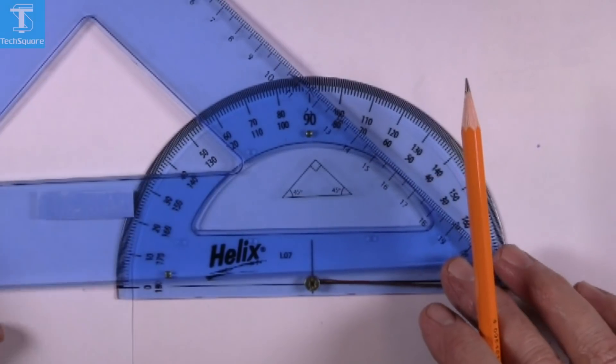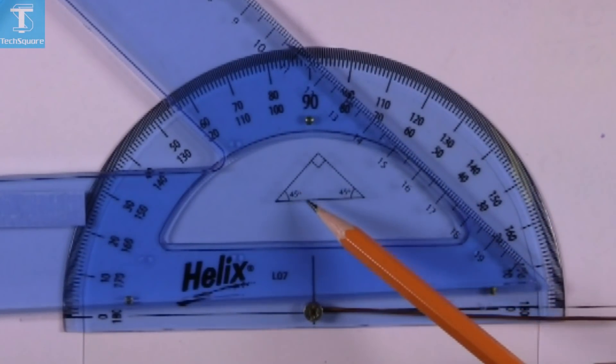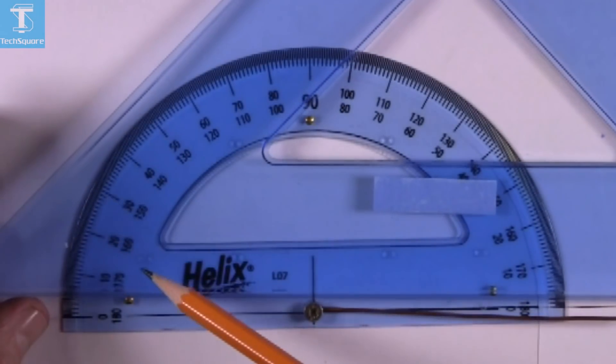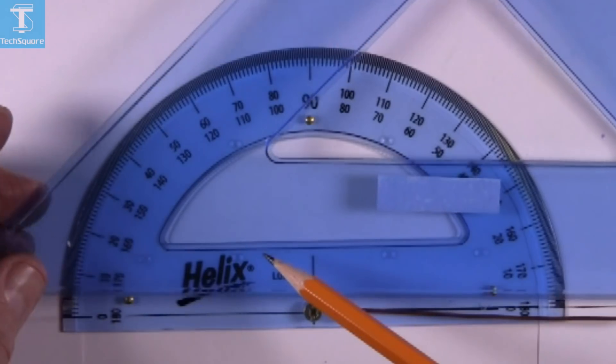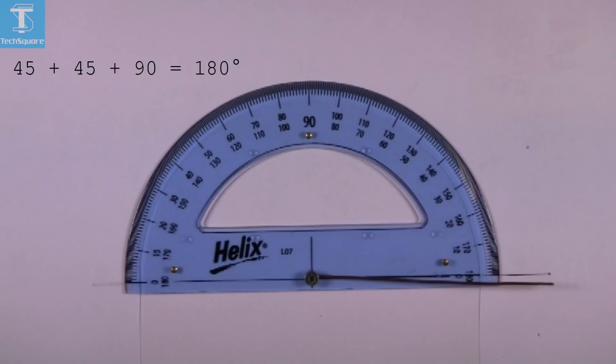This one here is the 45 degrees set square with angles of 45 and 45. This is the 45-degree angle here, so you have two 45-degree angles and a 90, again a total of 180 degrees in a triangle.